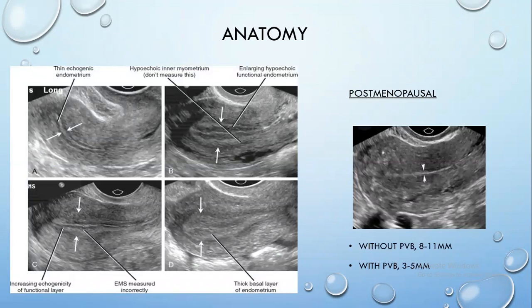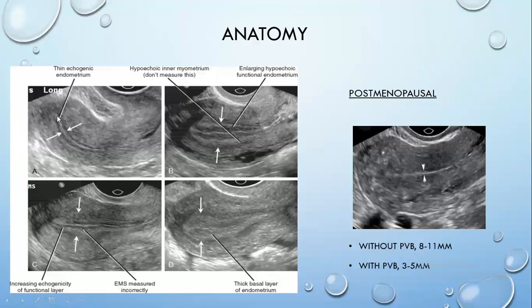We'll start with a brief anatomy of the endometrium. We know the endometrium undergoes different phases during the menstrual cycle. The first is the menstrual phase, where the endometrium appears as a thin echogenic line. Sometimes in this phase you can see a little fluid or blood within the endometrium, just as you can see near the cervix in this image. So in the menstrual phase it should appear thin and echogenic.